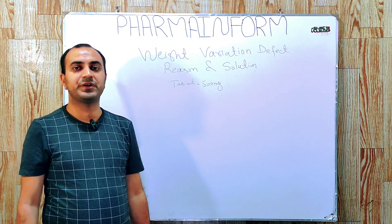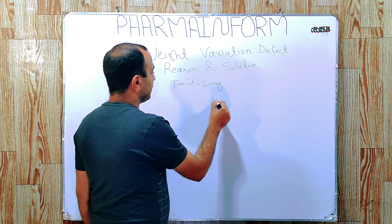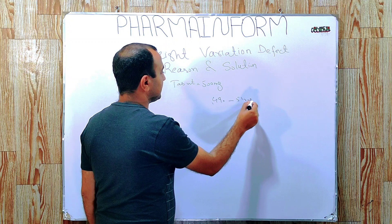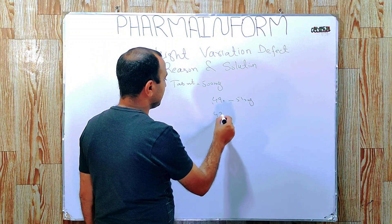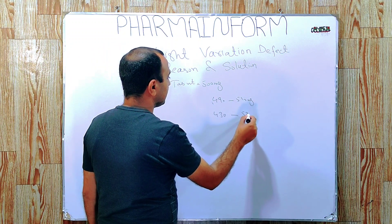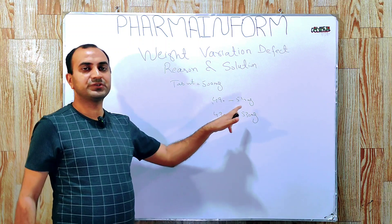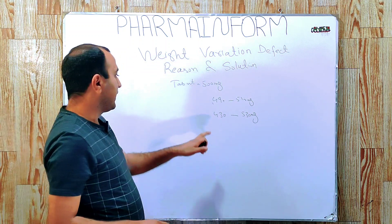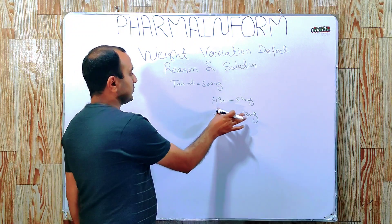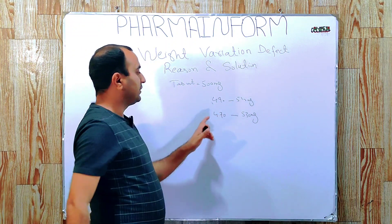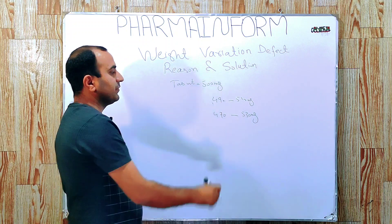For average tablet weight — the mean weight of 10 tablets — we have a range of 490 to 510 mg. And for individual tablets, we have values of 470 to 530 milligrams. During the whole compression process, our average weight must remain between 490 to 510 mg and our individual tablet weights must remain between 470 mg and 530 mg.